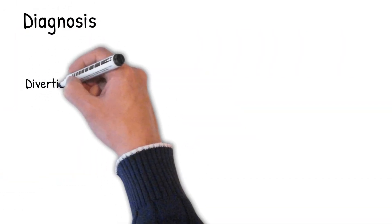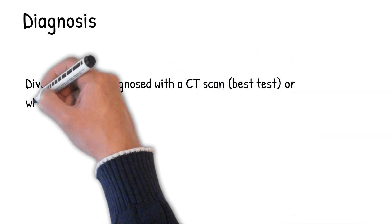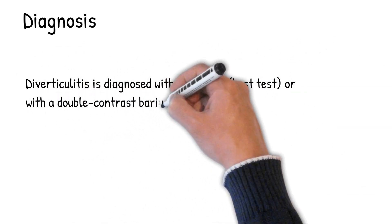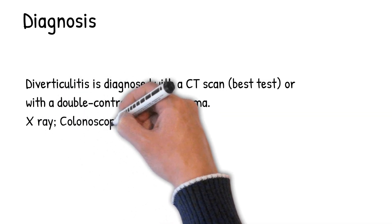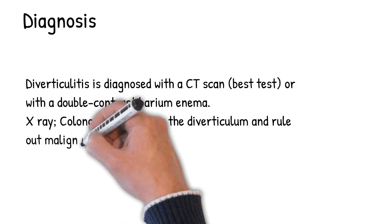Diverticulitis is diagnosed with a CT scan, the best test, or with a double contrast barium enema. For diagnosis, x-ray is also used. Colonoscopy will show the diverticulum and rule out malignancy. There are no specific blood tests.